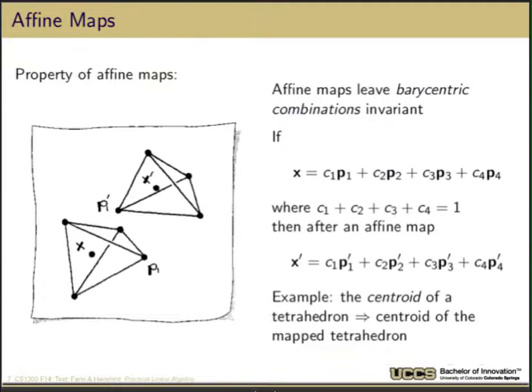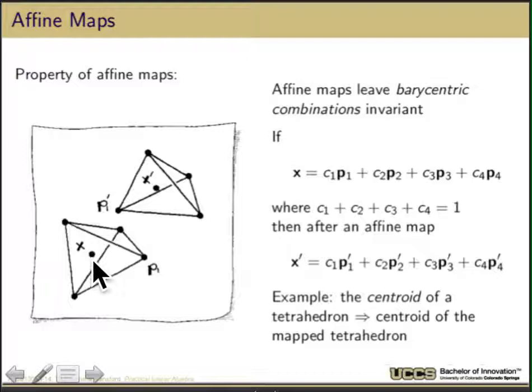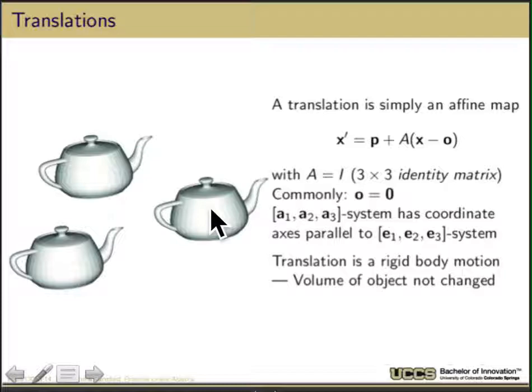Another important property very useful for graphics is that affine maps leave barycentric coordinates or combinations invariant. If I look at some point x in the original space and represent it as some combination C1*P1 + C2*P2 + C3*P3 + C4*P4 as a location within a tetrahedron, then after I do an affine map I get to use the exact same coefficients for each of the transformed points. It's convenient to represent points in graphics using a barycentric or affine coordinate system, since it is unaffected by affine transformations.